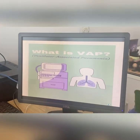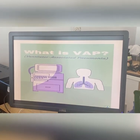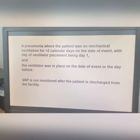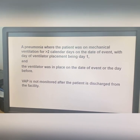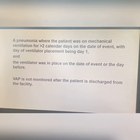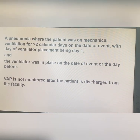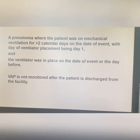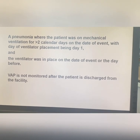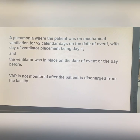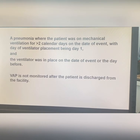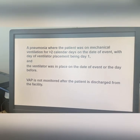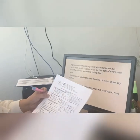Number one is VAP — Ventilator Associated Pneumonia. This is a pneumonia where the patient was on mechanical ventilation for more than two calendar days on the date of event, with the day of ventilator placement being day one. The ventilator was in place on the date of event or the day before. VAP is not monitored after the patient is discharged from the facility.